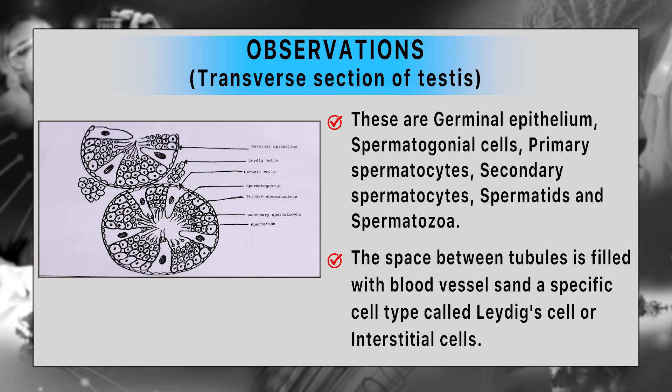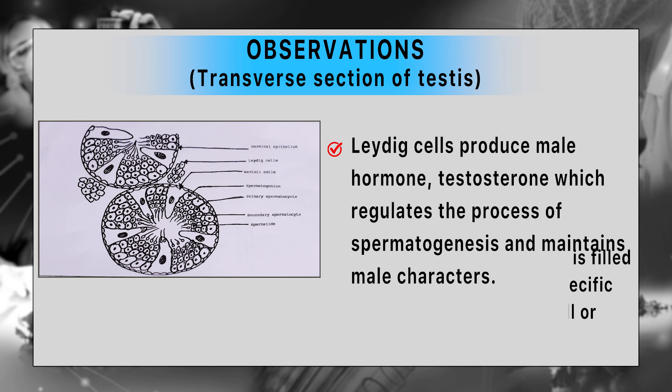The space between tubules is filled with blood vessels and specific cell types called Leydig cells or interstitial cells. The Leydig cells produce the male hormone testosterone, which regulates the process of spermatogenesis and maintains male characteristics.